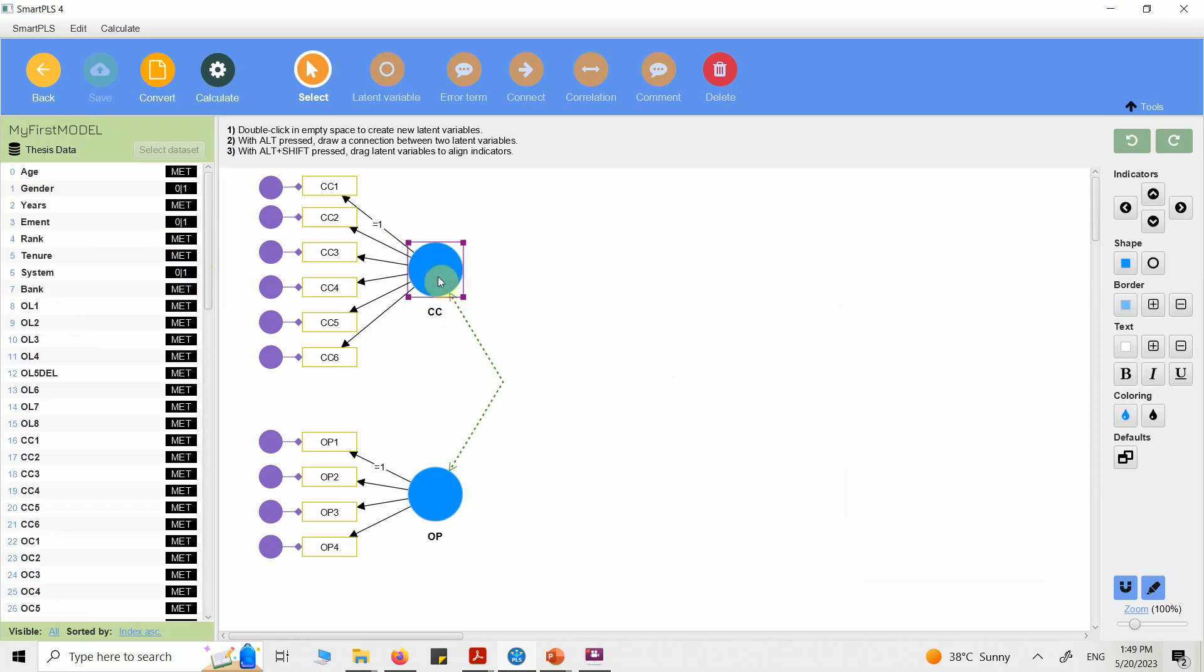Here is your latent variable. These are the items. And these are the error terms. We are going to go into greater detail as to how to model your relationships in Smart PLS using CBSEM. Thank you very much.